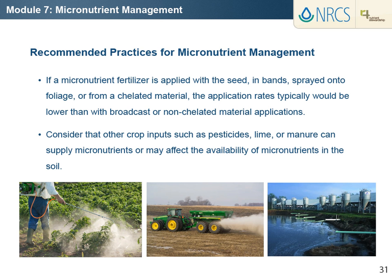For example, liming acid soils is a very cost-effective way of increasing crop availability of molybdenum. But excess lime application to soil that is slightly acid to neutral pH, or liming alkaline soils, can decrease the availability of other micronutrients such as copper, iron, manganese, and zinc.